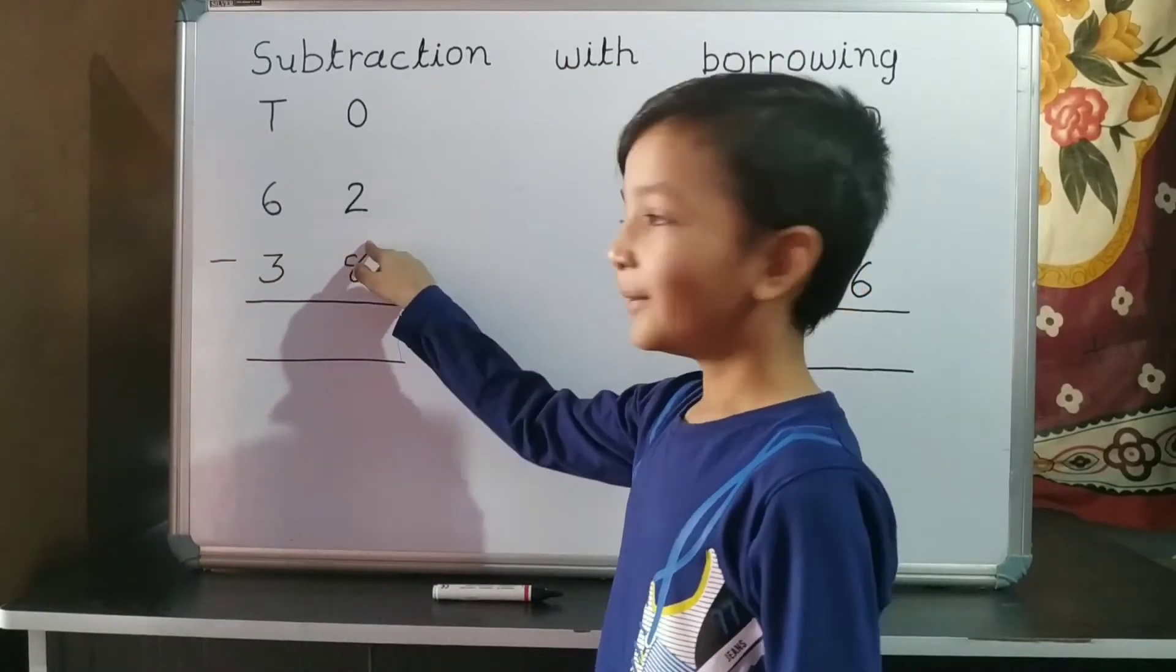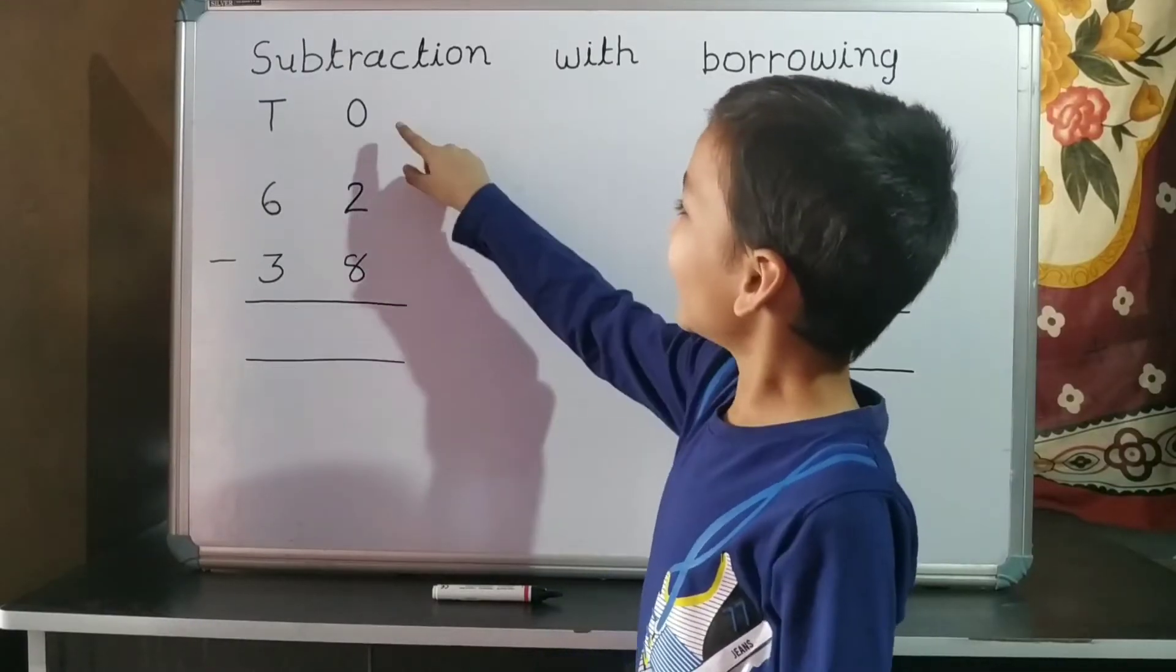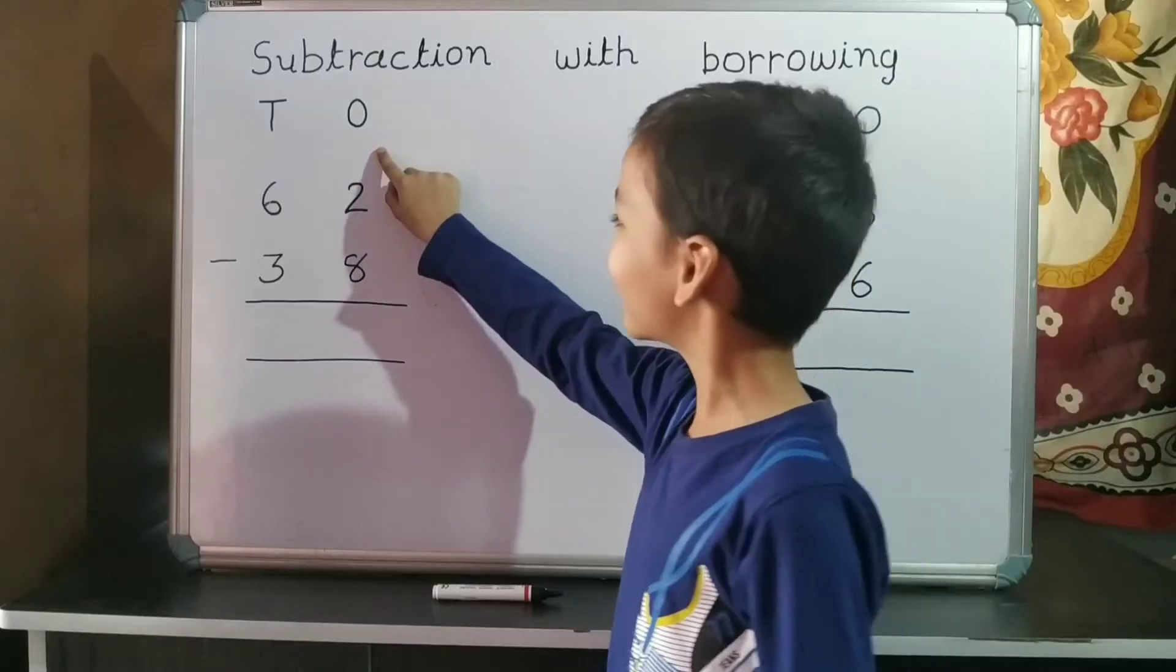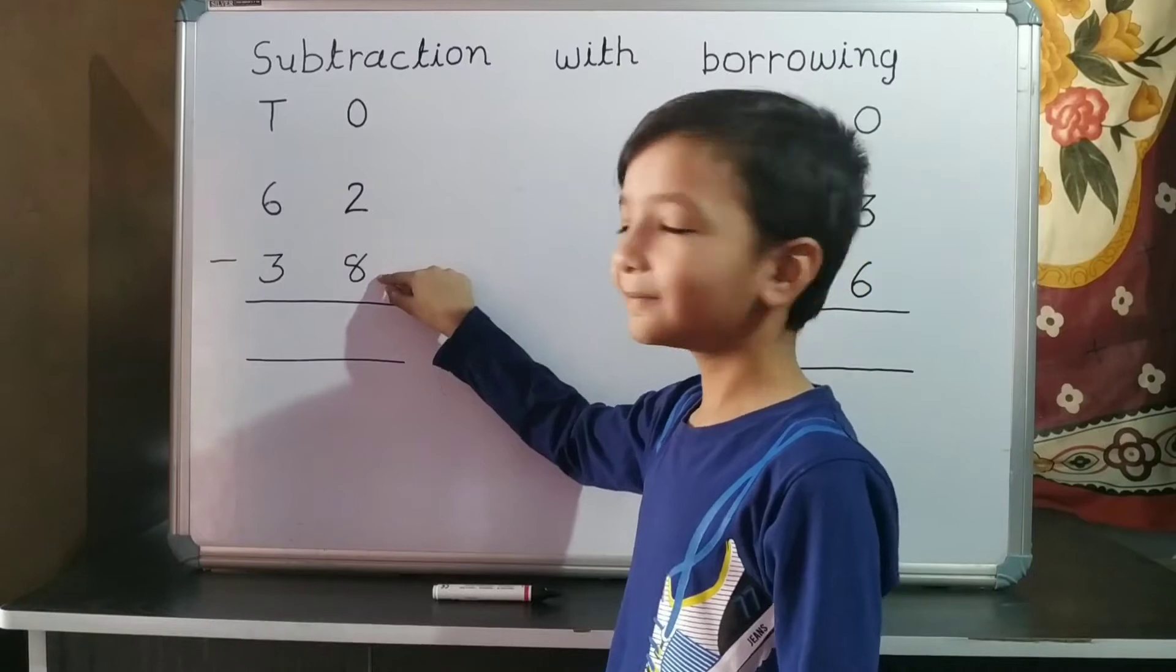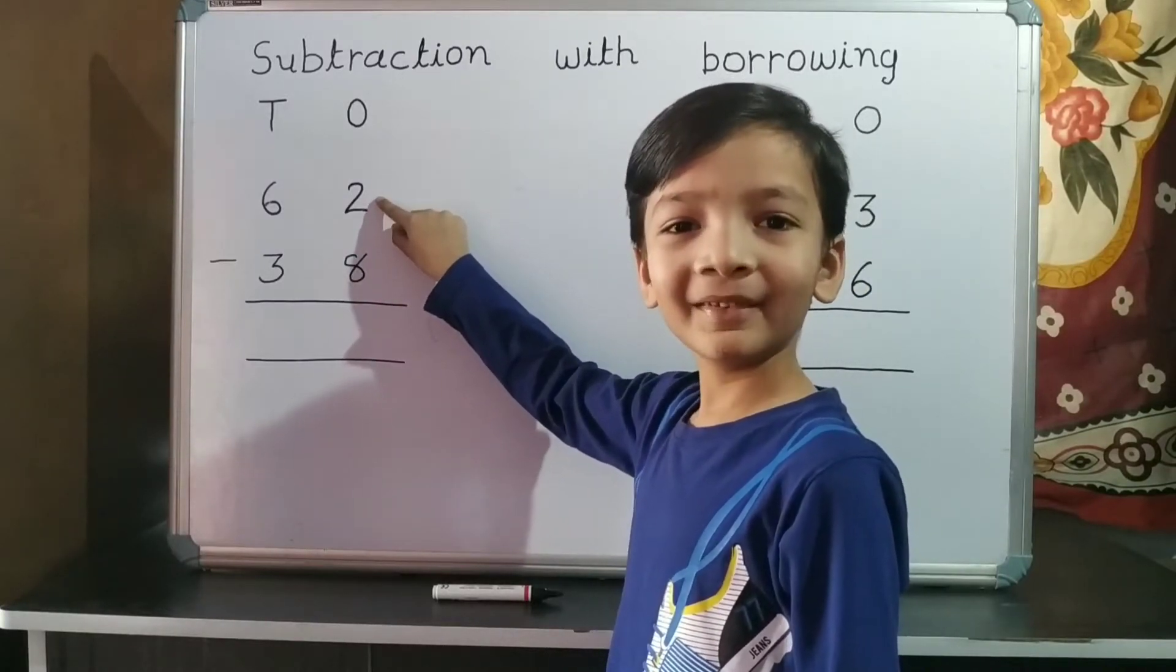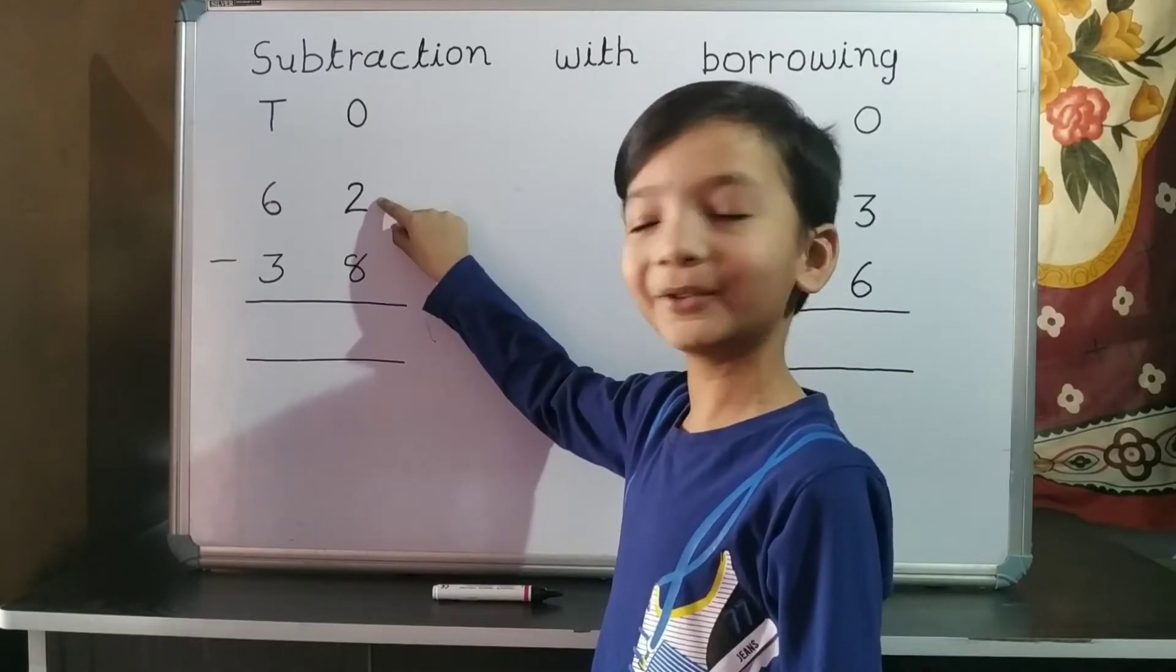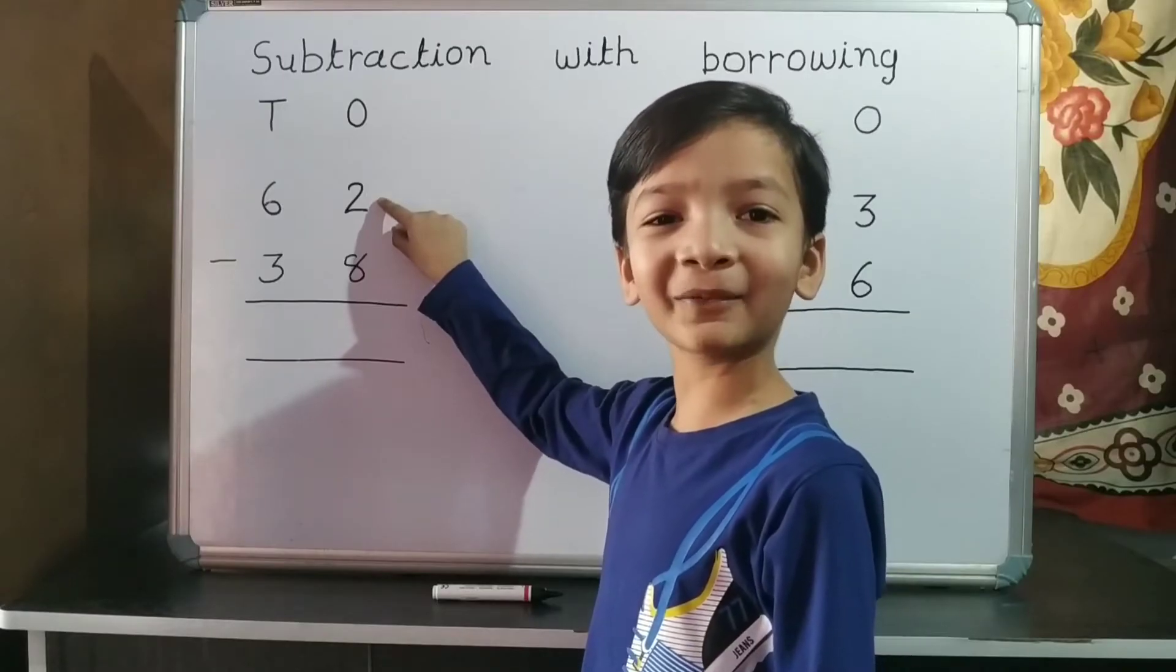62 minus 38. First we do subtraction of one's place. 2 minus 8. 2 is smaller than 8, so we cannot subtract 8 from 2. So we borrow 10 from 10's place.